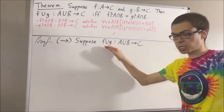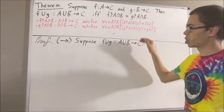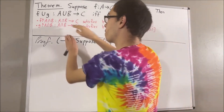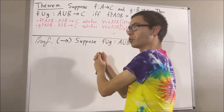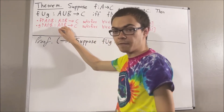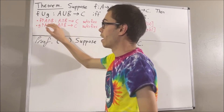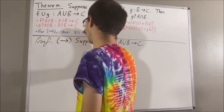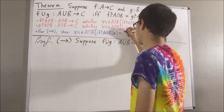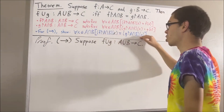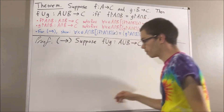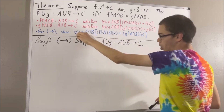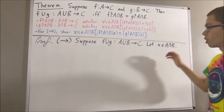We're supposing that the union of f and g is a function from A∪B to C. From here, we want to show that these two restriction functions are equal. We know they are both functions from A∩B to C, so to show they're equal, we want to show that for all x in A∩B, the restriction of f to A∩B evaluated at x equals the restriction of g to A∩B evaluated at x. So let's take an arbitrary element x in A∩B.